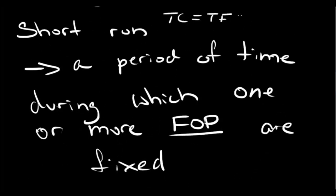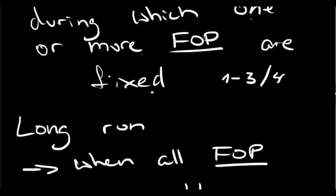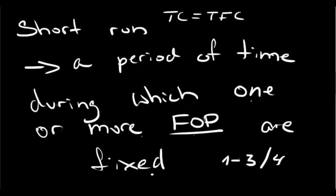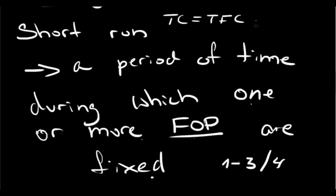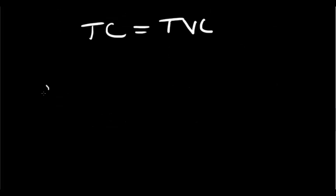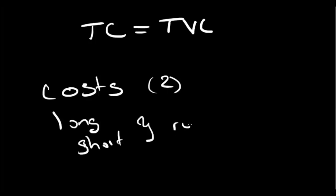Going back to our formula: in the short run, total cost equals total fixed cost plus total variable cost, where up to three of the four factors of production may be fixed, and whichever is not fixed is the variable cost. In the long run, all four factors of production are variable, so total cost equals only total variable cost — there is no fixed cost component. That's it for this video — we covered two kinds of costs and the short and long run.